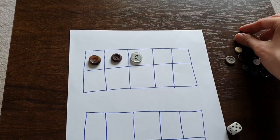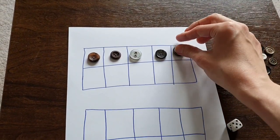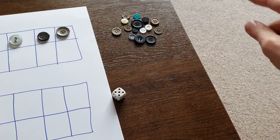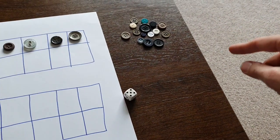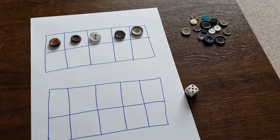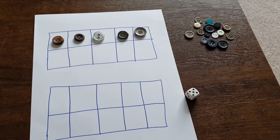So you're filling your ten frames and your partner wherever they are, mine is invisible I'm on my own, and your partner's also filling theirs to 20 as well.